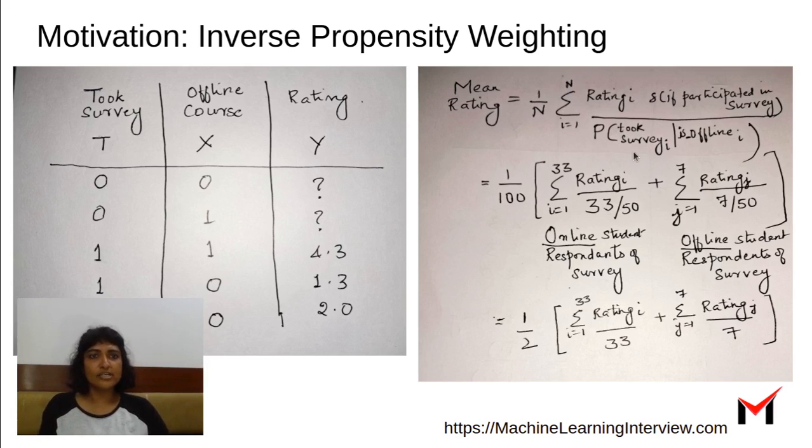So we divided this into two terms, the term for students who took it online and term for students who took it offline. 33 by 50 would be the denominator for students who took it online. So probability of the survey being taken given the student is online is 33 by 50. And similarly, it is 7 by 50 for offline students.